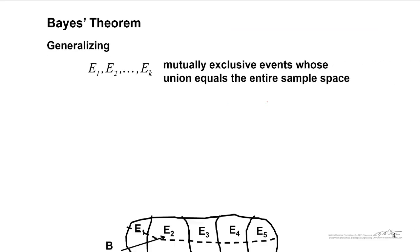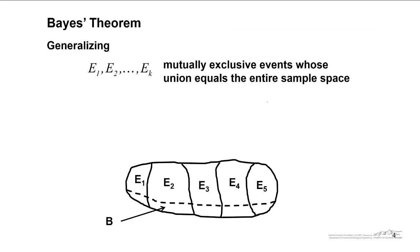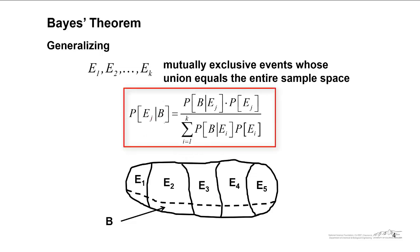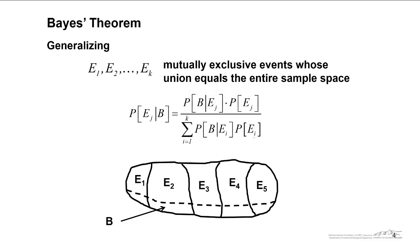We can also extend this if we didn't have just two events — if we had a bunch of different events. So generalizing: if we have events E1 through EK, and B can occur with different probabilities in each of those events, and E1 through EK are mutually exclusive and exhaustive, meaning their union equals the entire sample space, then we can generalize Bayes' Theorem. The probability of E-sub-J given that B has occurred can be calculated by this formula, where the denominator is the sum of the conditional probabilities P(B|E_i) multiplied by P(E_i). This is Bayes' Theorem in general.